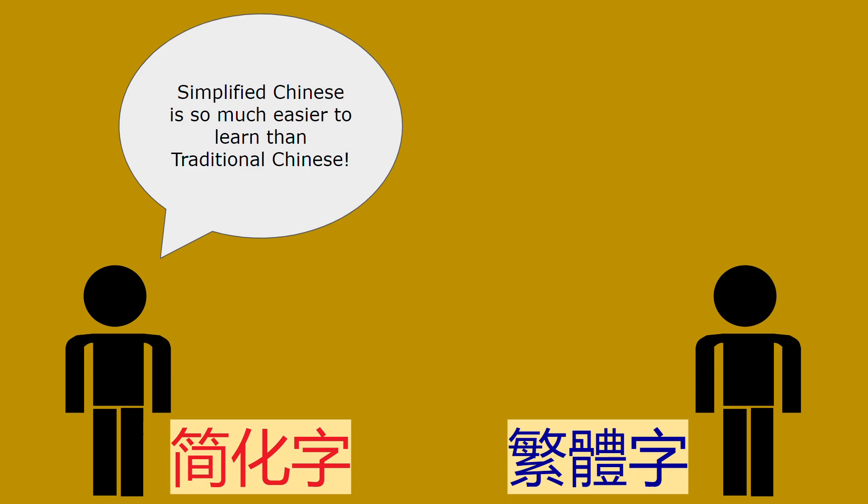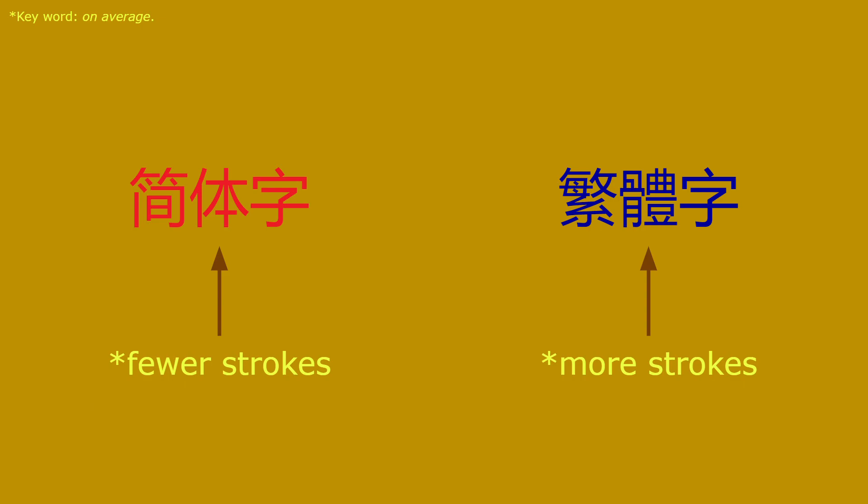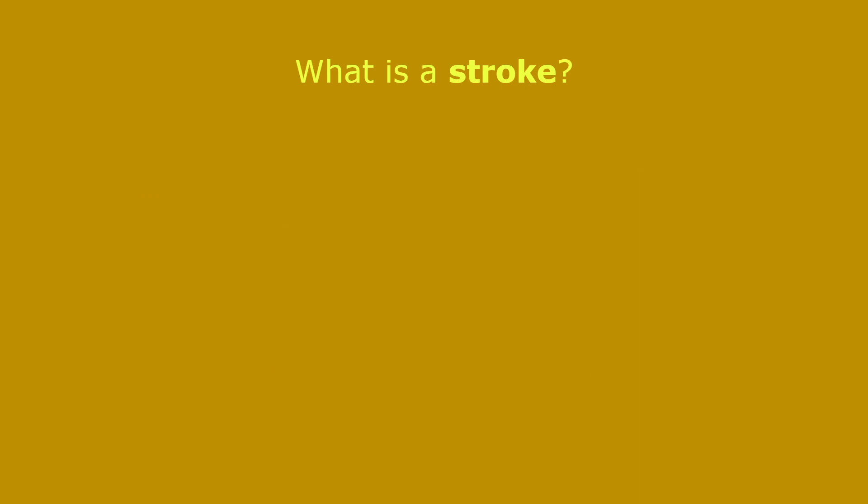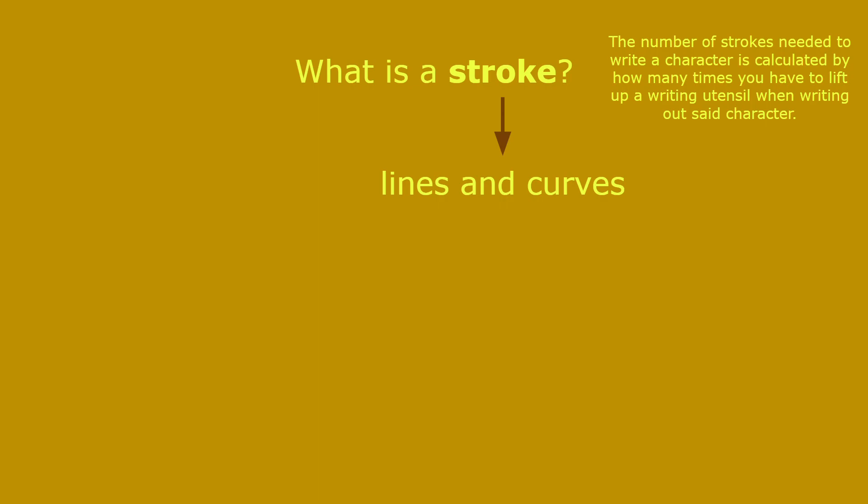Supporters of simplified Chinese often emphasize how much easier it is to learn compared to traditional Chinese. Simplified characters do have fewer strokes than traditional characters. Strokes are the lines and curves that you write out — each Chinese character consists of a certain number of strokes, calculated by how many times you have to lift up a writing utensil when writing the character.